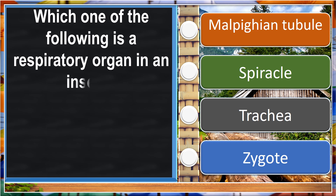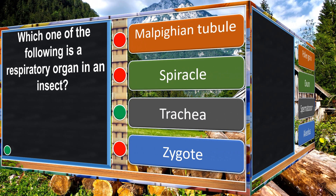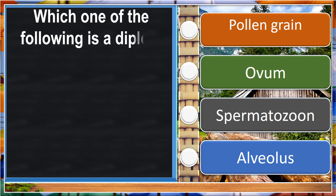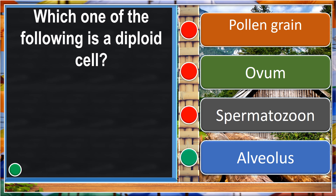Which one of the following is a respiratory organ in an insect? Which one of the following is a diploid cell? Alveolus.